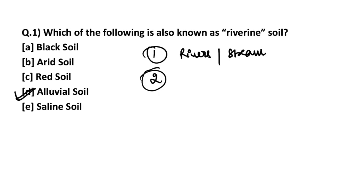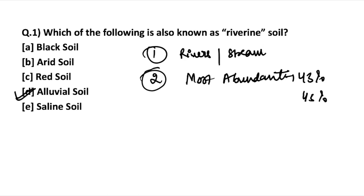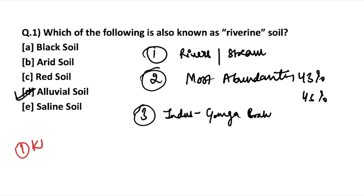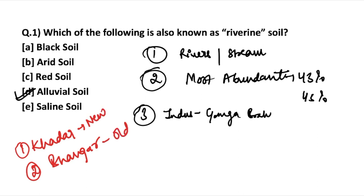Another feature of alluvial soil — a question even asked in previous papers — is that it is the most abundant or most easily available soil in India, covering approximately 43% to 45% of land. It is available in the Ganga-Brahmaputra plain. There are two categories of alluvial soil: Khadar (new alluvial) and Bangar (old alluvial). This is very important to remember.